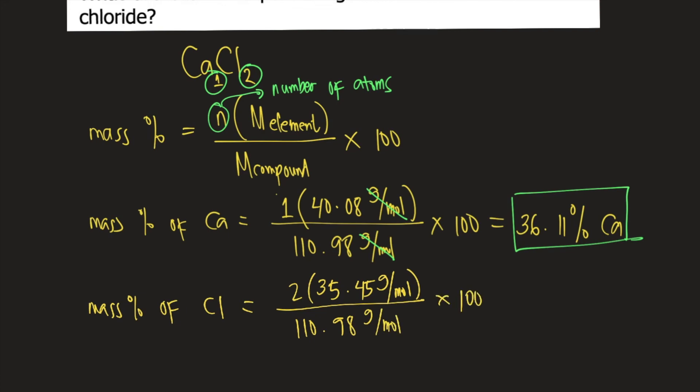Grams per mole will cancel. And this is equal to 63.89% chlorine. This is the mass percentage of chlorine.